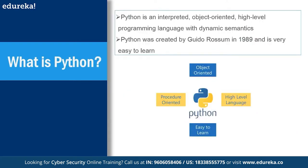Python is an interpreted, object-oriented, high-level programming language with dynamic semantics. Python is a third-generation language — it is interpreted as it runs, with no compilation step. Being a 3GL has its own advantages, and it is primarily a high-level programming language.